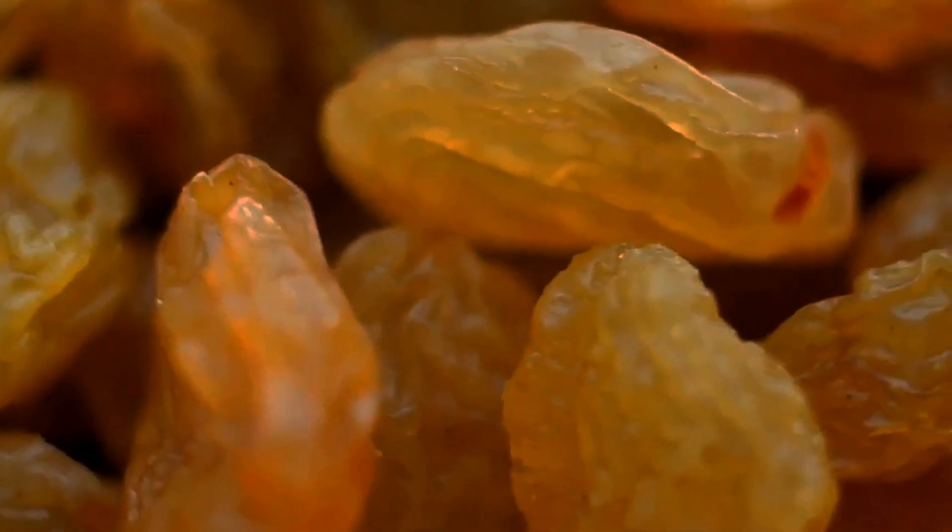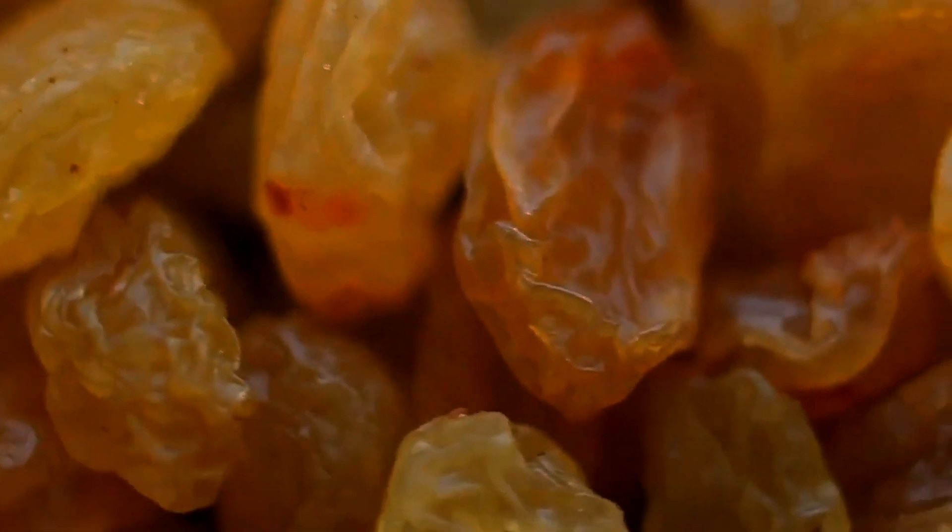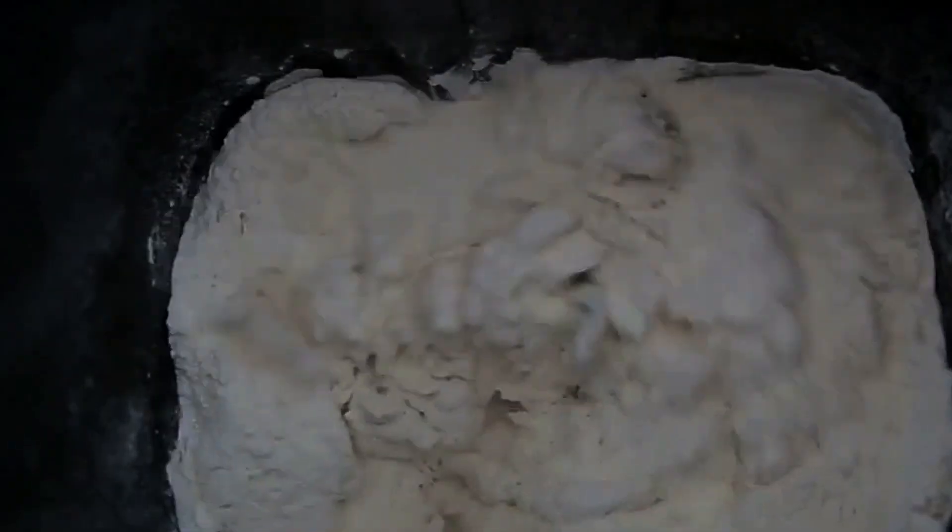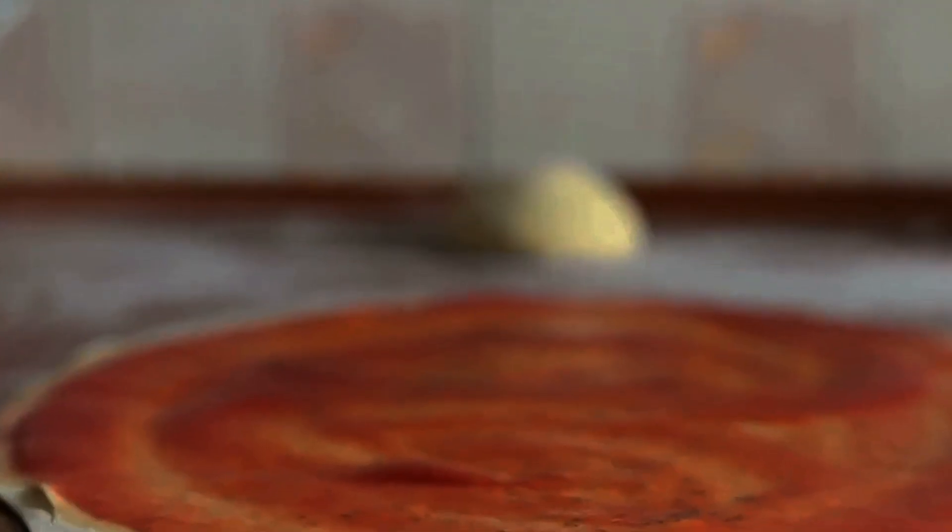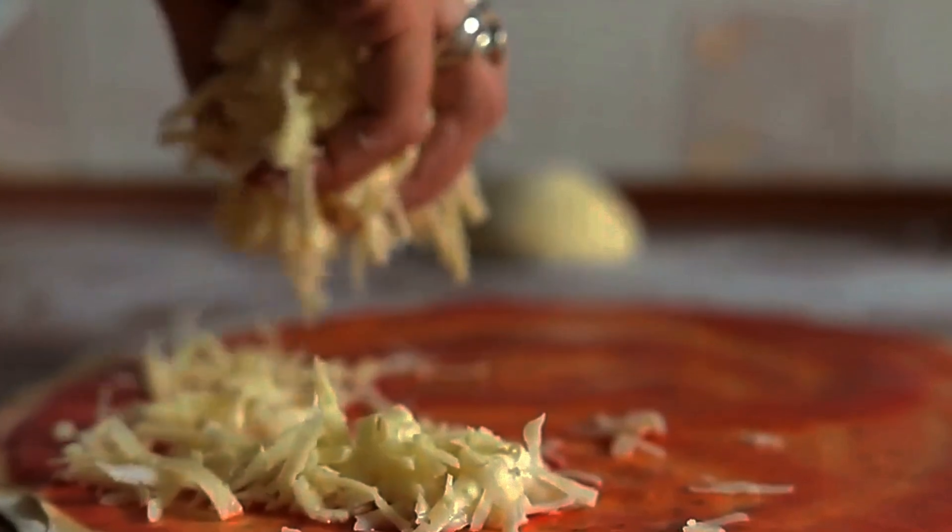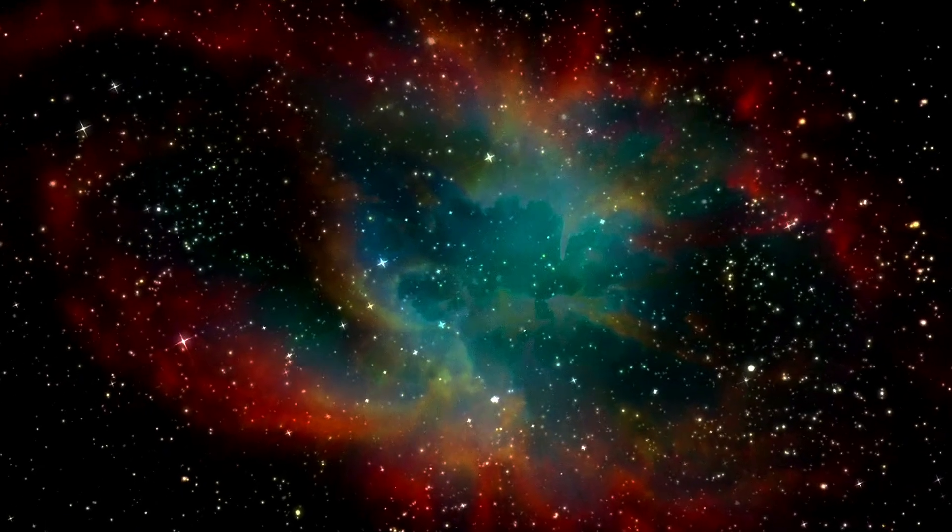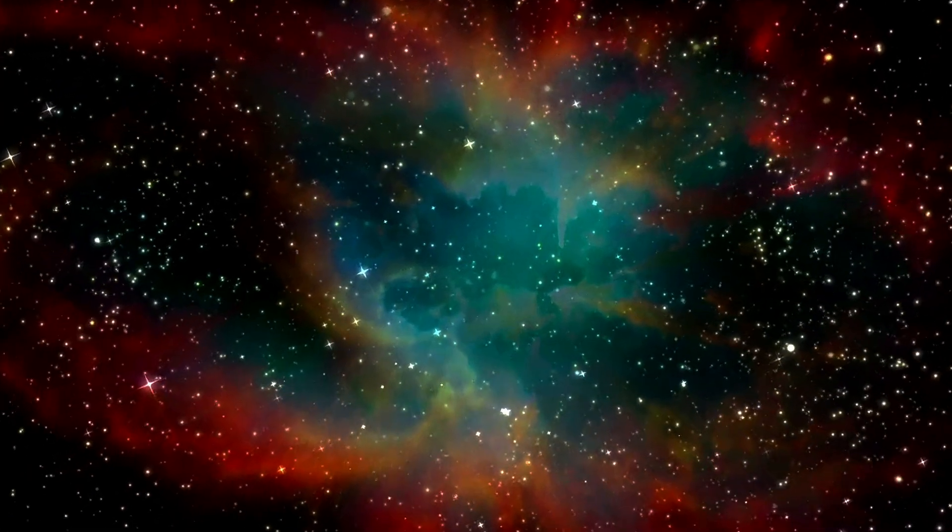Now, in our analogy here, the raisins are like galaxies, or bound groups clusters of galaxies, and the dough is like the expanding universe. Only, in this case, the dough that represents the fabric of space cannot be seen or directly detected, doesn't actually get less dense as the universe expands, and simply provides a stage for the raisins or galaxies to inhabit.